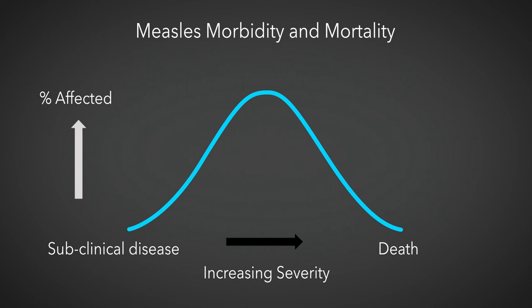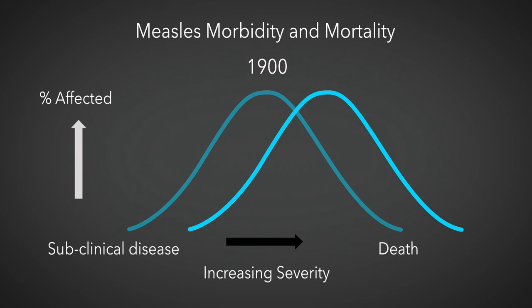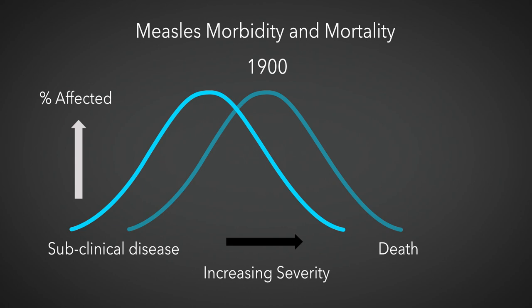We have this concept of subclinical disease. Going back in history to when measles was a major killer, the curve was shifted to the right — a higher proportion of severe cases with death, very few subclinical exposures. That was the historical pattern. Now what has happened is the opposite: natural measles is associated with very few deaths. It is becoming a milder and milder disease with lower mortality, lower morbidity, and far more subclinical cases. It's not that measles isn't infecting individuals — the disease was simply becoming milder.